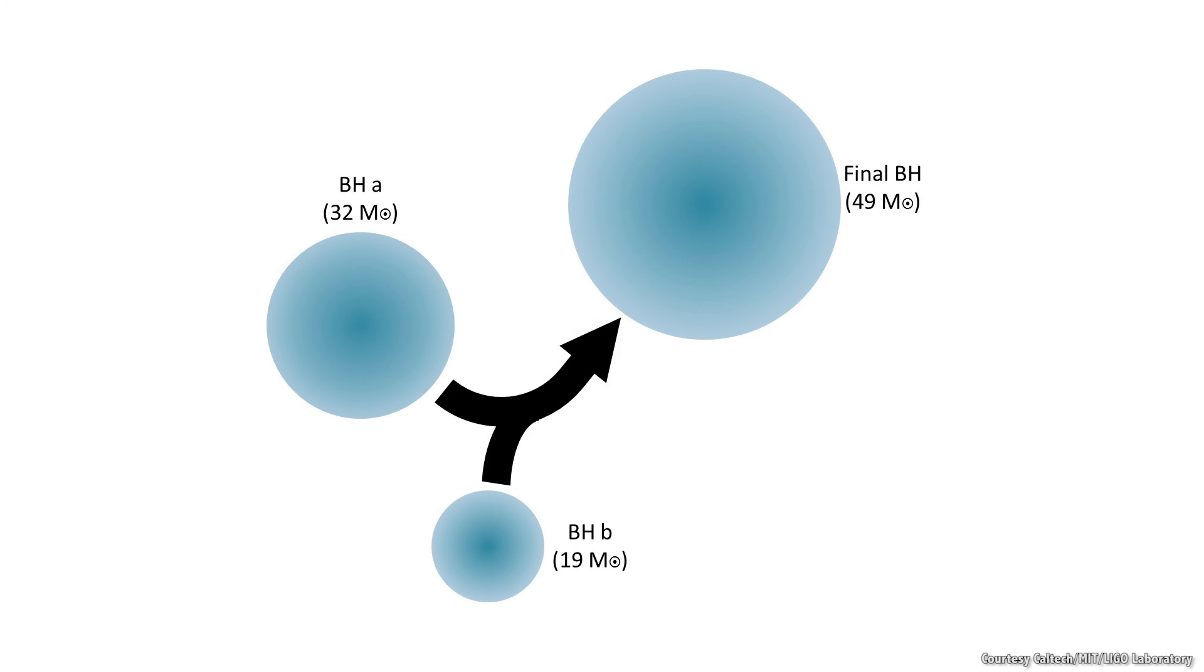If you do the math, twice the mass of the Sun was converted into gravitational waves as the black holes merged. I just want to say that again. Two times the mass of the Sun disappeared from the black holes and went into gravitational waves.